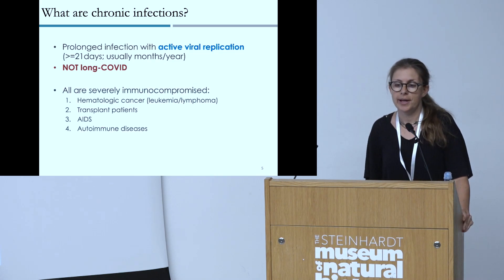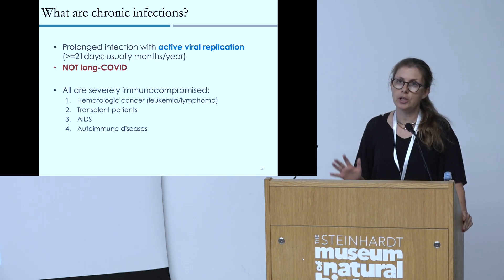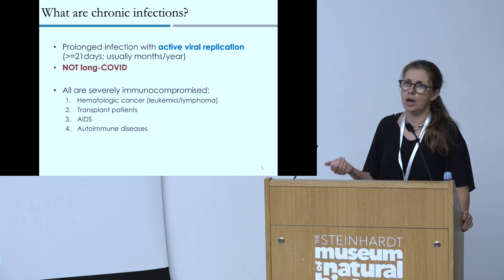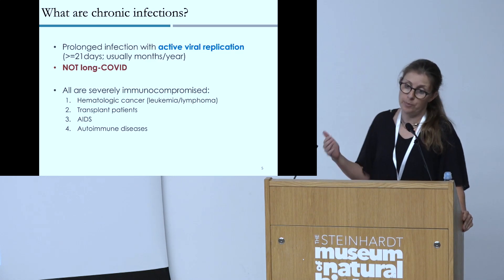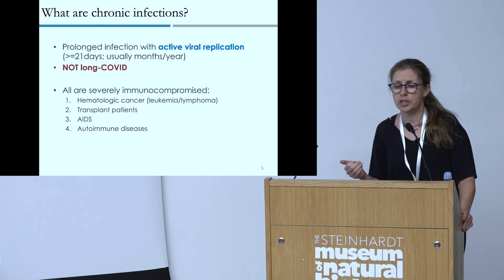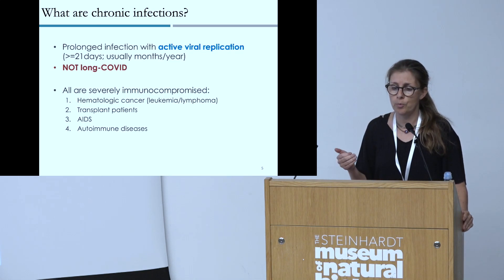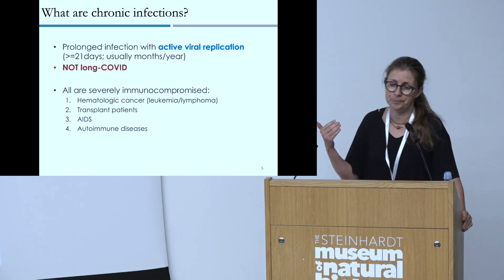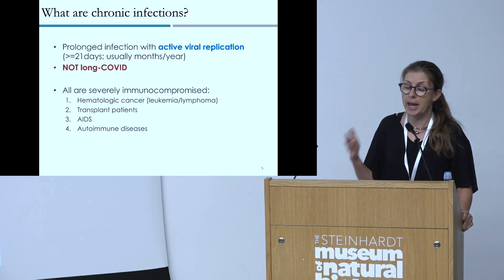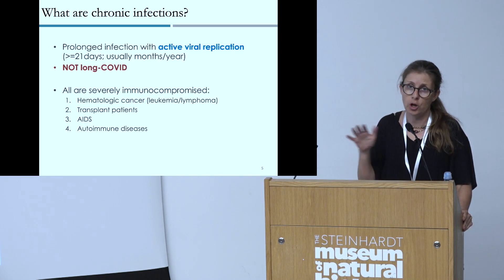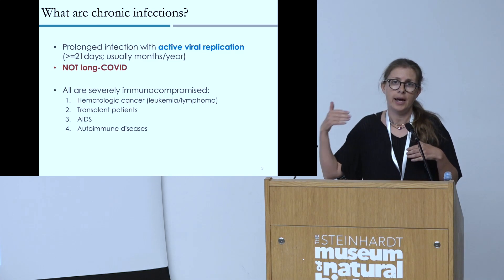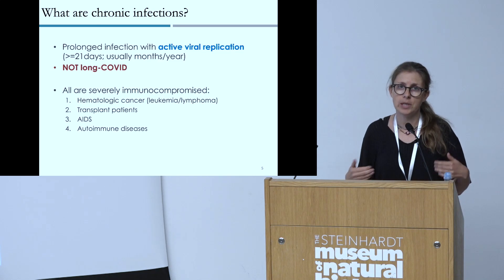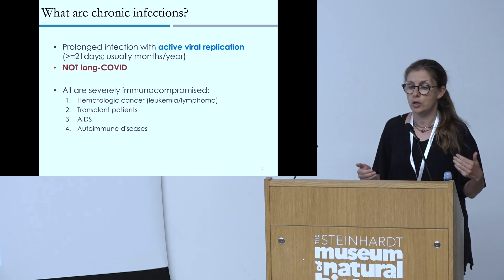All cases found to date are from severely immunocompromised patients — those with some defect in the immune system, almost always in the adaptive immune system. The majority are hematologic cancer patients — leukemia or lymphoma — transplant patients treated with immunosuppressive drugs, AIDS patients who have progressed to immune deficiency, and autoimmune disease patients, again treated with immunosuppressive drugs.